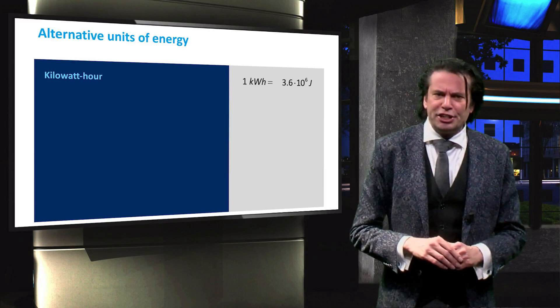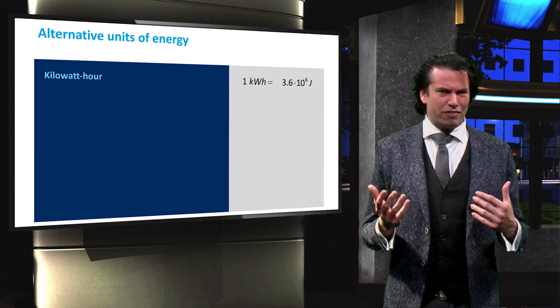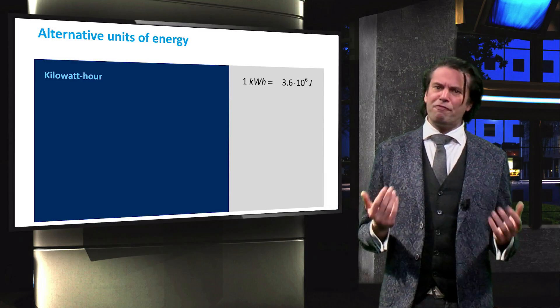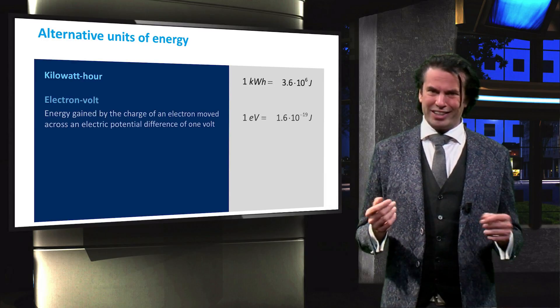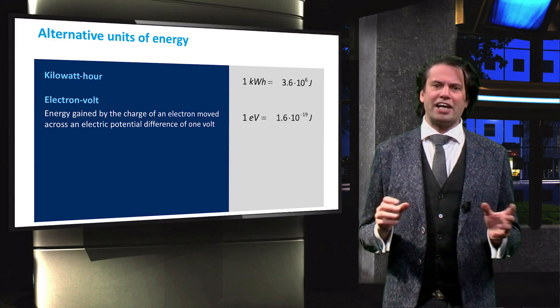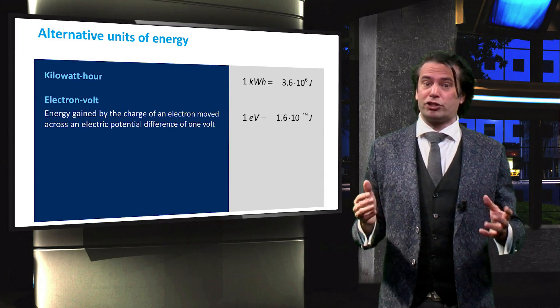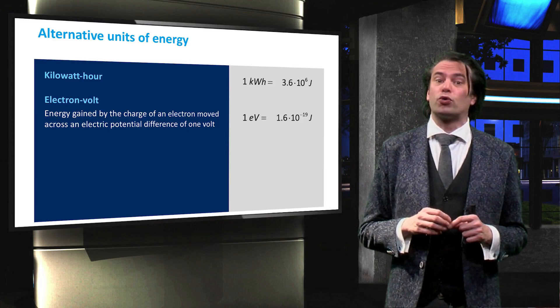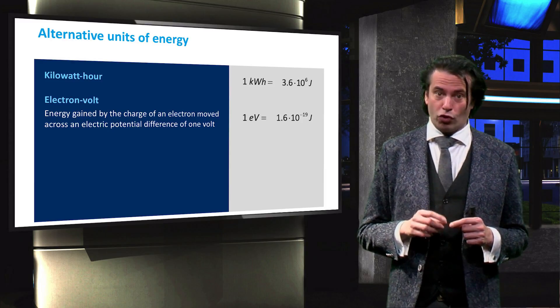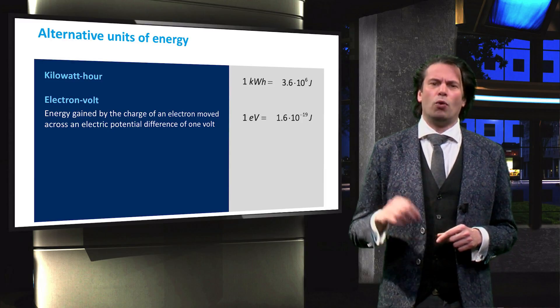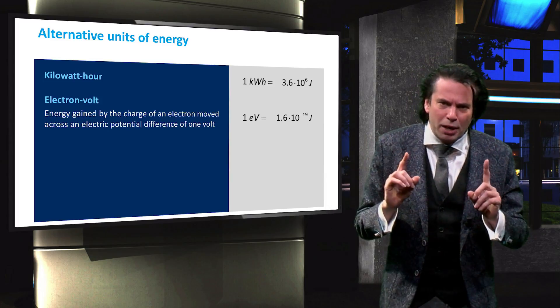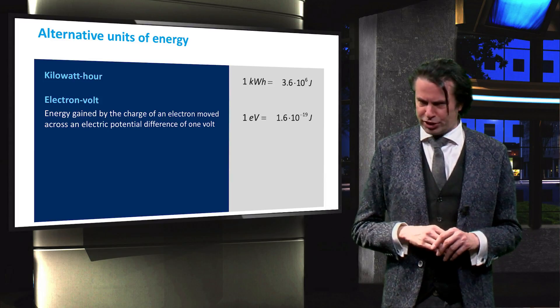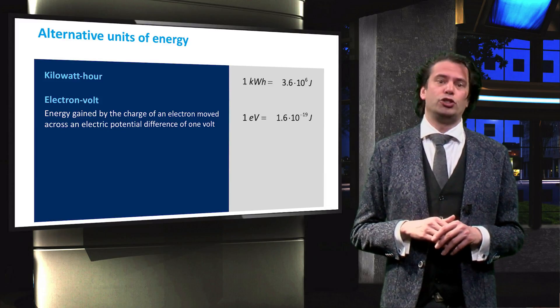The amounts of energy used in the atomic physics relevant for solar cells, on the other hand, are very small. We therefore use the unit electron volts. An electron volt is the amount of energy a body with a charge of one elementary charge gains or loses when it is moved across the electric potential difference of one volt. One electron volt is therefore equal to the elementary charge times one volt, which equals 1.6 times 10 to the power minus 19 joules.